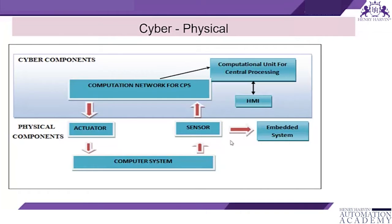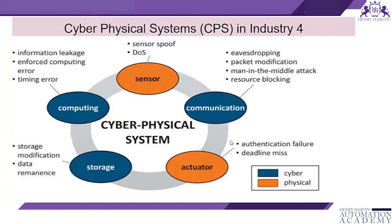When we look at cyber physical systems in Industry 4.0, sensors and actuators are the physical systems, while computing, communications, and storage are the cyber part. In storage we maintain and store data. In computing we ensure there is no information leakage and no timing errors. In communication, where data is transmitted from sensors to the cloud and to devices, we have to guard against eavesdropping, packet modification, and man-in-the-middle attacks — all cyber attacks we commonly see in cyberspace.